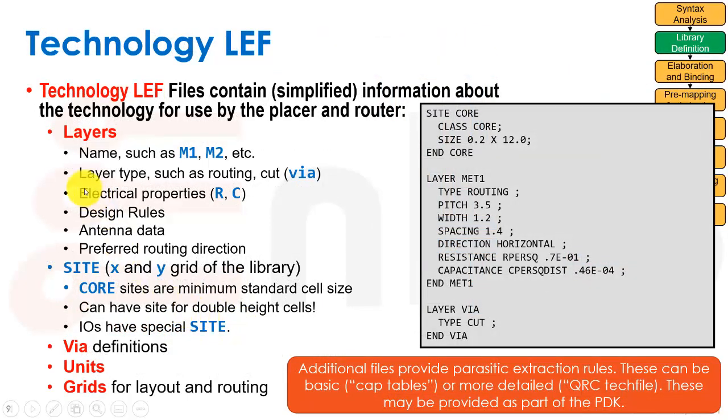And indeed, when we go and look at the tech LEF, the technology LEF contains simplified information about the technology for use by the placer and router. It contains layers such as metal one, metal two, what the types are. It contains a whole definition about vias, those are a big part of the technology LEF file usually. Electrical properties like the R's and the C's, design rules, antenna data, preferred routing directions, etc. It has the site, which is the X and Y grid of the library. Usually we have a site that's called something like core, and that says the minimum standard cell size, what the exact height is, and what the minimum multiple of the width is. Sometimes we have double height cells, but it will be two times the height of the cell, not one and a half times, so we can sit it inside two rows.